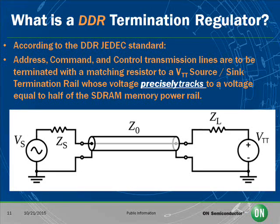A DDR termination regulator is defined by JEDEC as terminating address, command, and control transmission lines with a matching resistor to a source-sync termination rail that tracks the memory power rail at a voltage equal to one half of VDD.